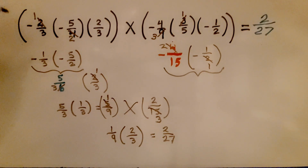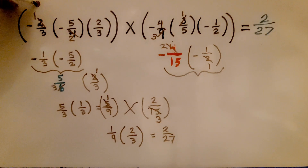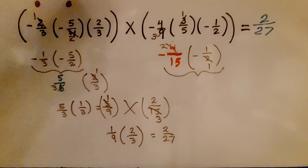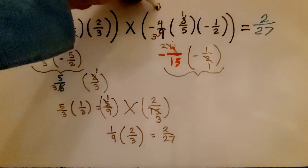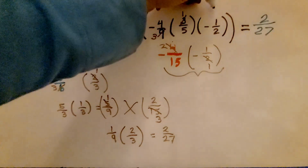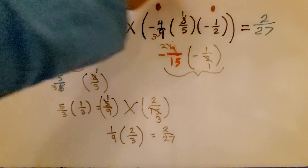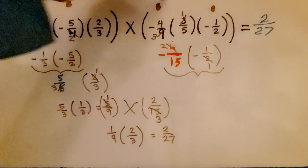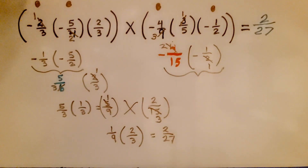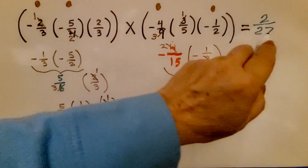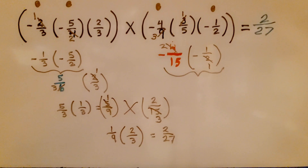Counting the negative factors: we had a negative factor here, here, another one here, and another one there. That's four negative factors. Our product is going to be positive — it's a positive two twenty-sevenths.